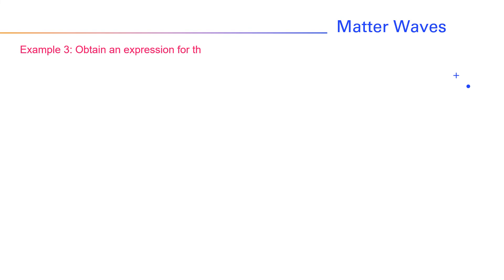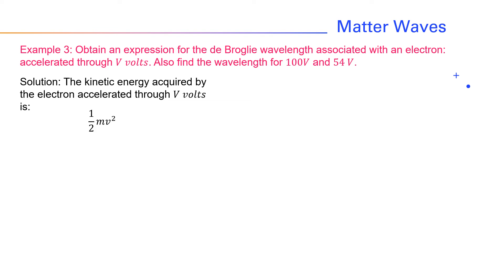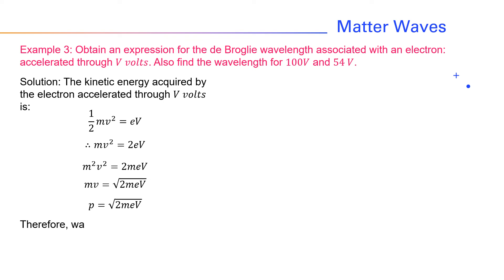Obtain an expression for the De Broglie wavelength associated with an electron accelerated through V volts. Also find the wavelength for 100 volts and 54 volts. The kinetic energy acquired by the electron accelerated through V volts is ½mv² = eV. Therefore, mv² = 2eV, and m²v² = 2meV, or mv = √(2meV). But mv is momentum p. Therefore, p = √(2meV). Now, the wavelength associated with the electron is λ = h/p = h/√(2meV). This is the final expression for the De Broglie wavelength associated with an electron accelerated through V volts.